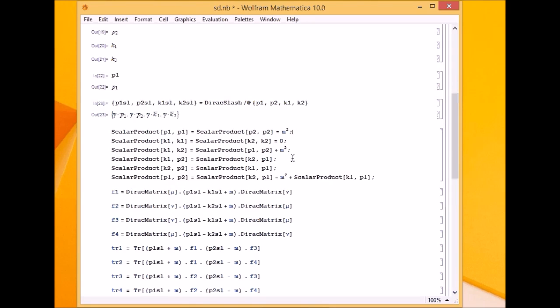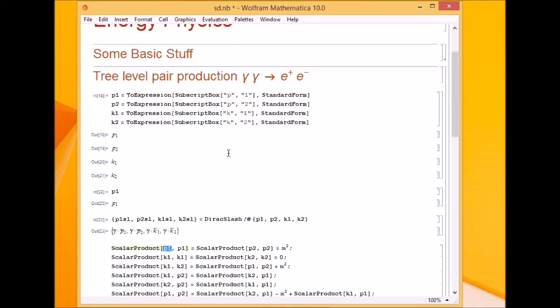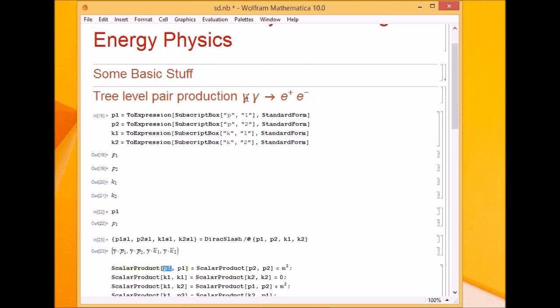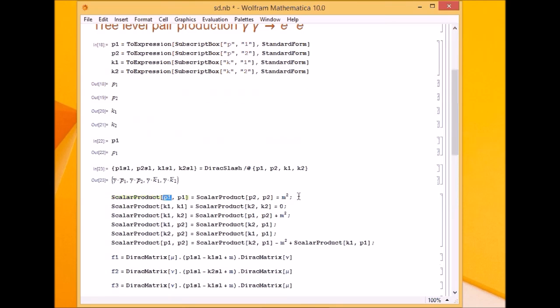Now as I showed you the scalar product, I'm just defining p1 square should be m square, because p1 and p2 refer to the electrons. Therefore fermion momentum square is m square. While k1 and k2 refer to the photons. And as you know photons are massless. So all these are definitions that we are doing. Let me run all of them at once.